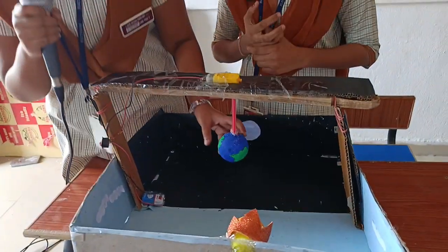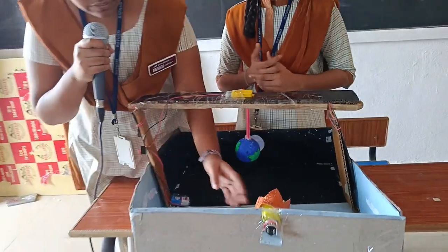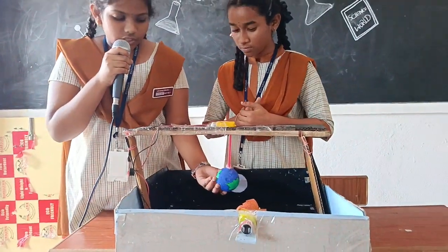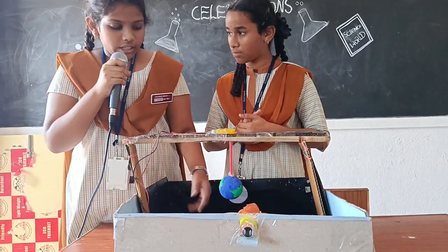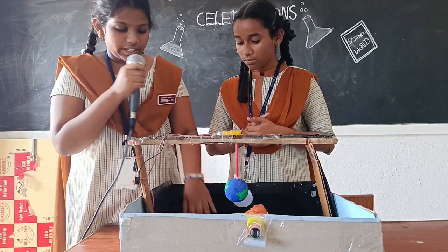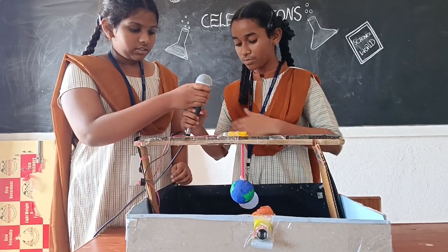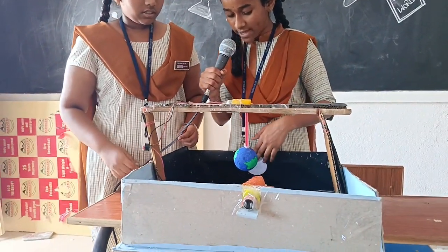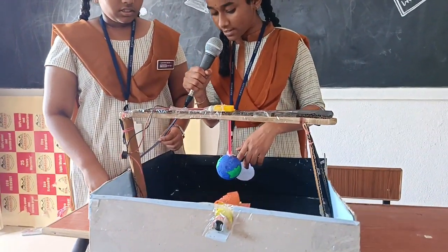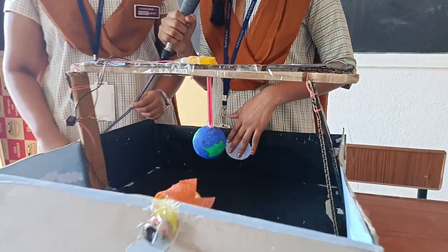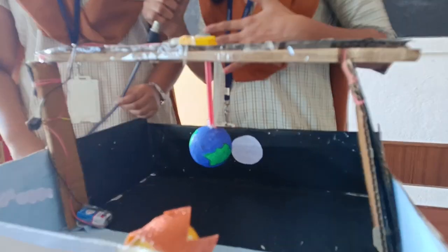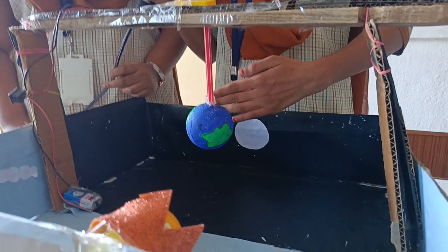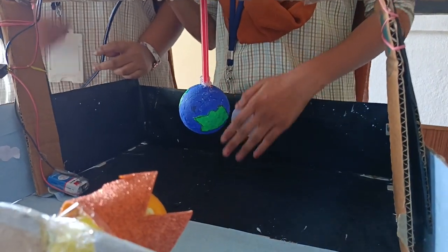When we rotate the earth, if the sun reflects on one side of the earth, it is a day. The moon reflects on the other side, it is called night.